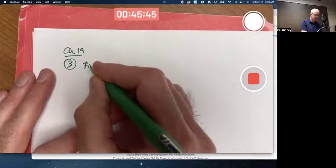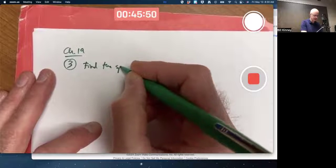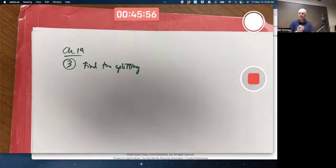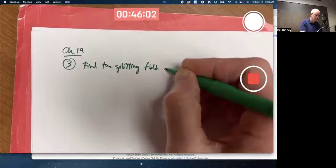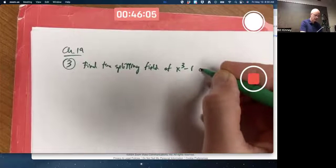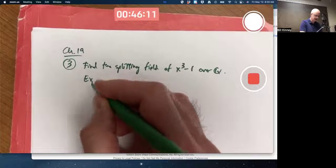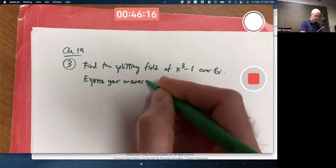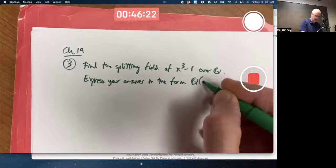Number three says find, well, I could say a splitting field. The book says the splitting field. But remember, splitting fields are actually not unique, though they are isomorphic. What is the definition of a splitting field?